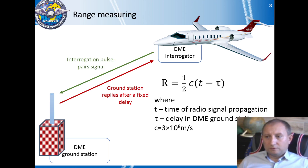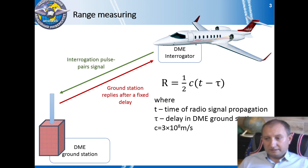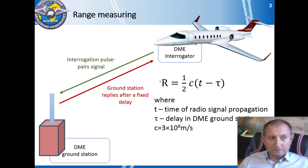DME is grounded on the time-of-arrival principle of distance measurement. The onboard interrogator transmits an interrogation radio signal at the frequency of the DME transponder. The ground station replies with a copy of this signal after a fixed time delay tau. The DME interrogator receives the reply and counts the time of the signal's round journey. Slant distance is calculated using the equation: R equals half of C multiplied by the quantity T minus tau.